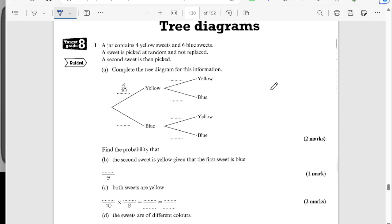Question one. A jar contains four yellow sweets and six blue sweets. A sweet is picked at random and not replaced. The second sweet is then picked. Complete the tree diagram for this information.